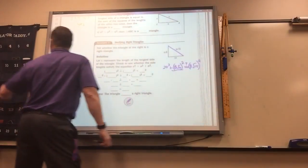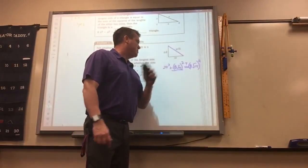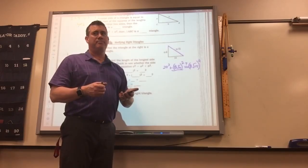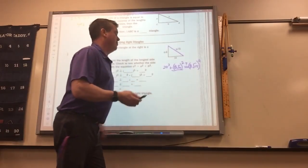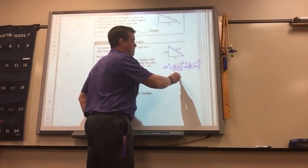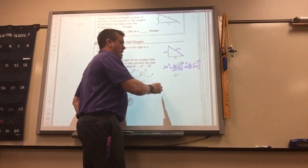Now when you have those, when you do this, 8 times the square root of 6 squared, what's happening here is you square the 8 and you square the square root of 6.